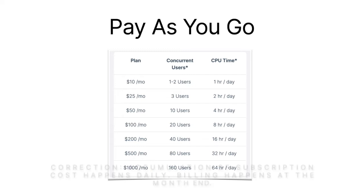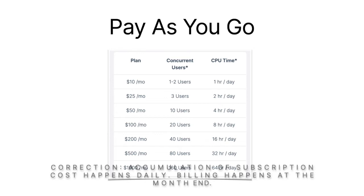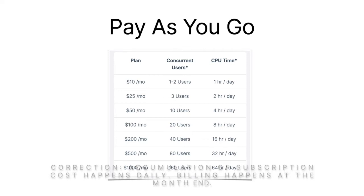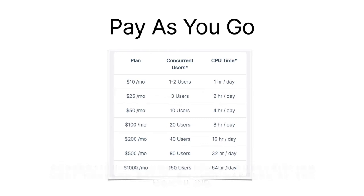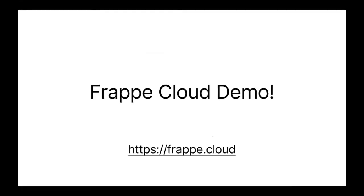For every site which is active for one day we charge you for that one day. For example, if there is a $30 site and it is active for one day, we'll charge you $1. We accumulate this amount and at the end of the day your card will be charged that amount. So if you have 10 sites for 10 customers, your card will be charged for all of those.